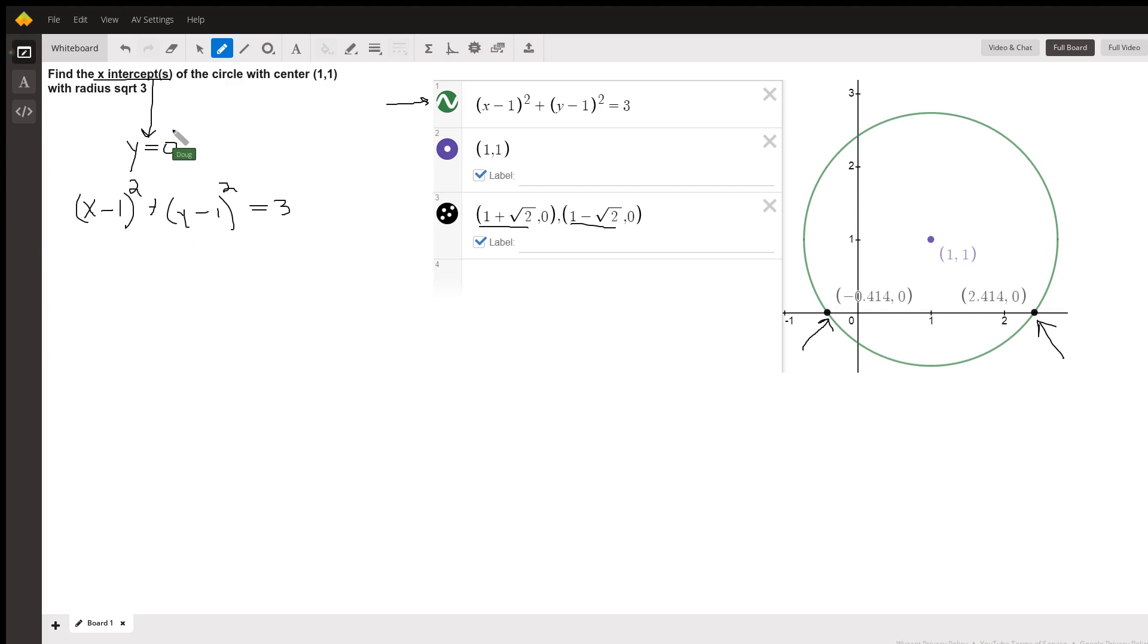Well, the x-intercepts occur when y equals 0. So if we put 0 in for this y, we get (x minus 1) quantity squared, plus 1, because 0 minus 1 is negative 1. Negative 1 squared is 1, equals 3.